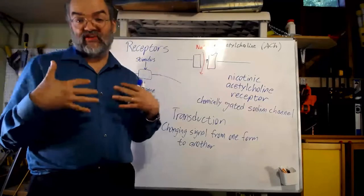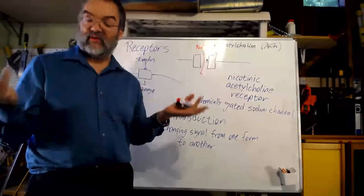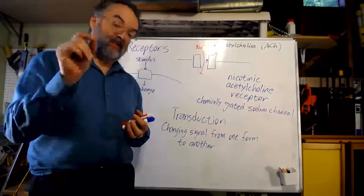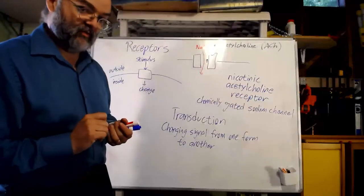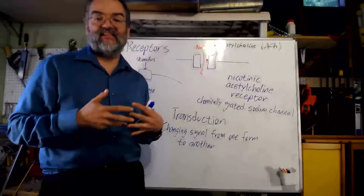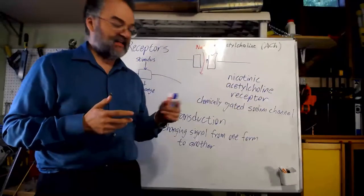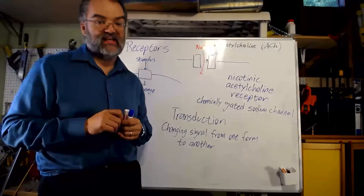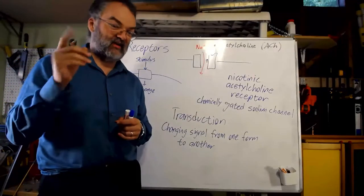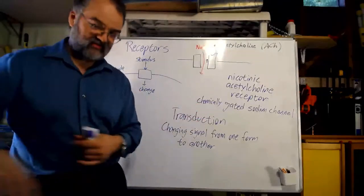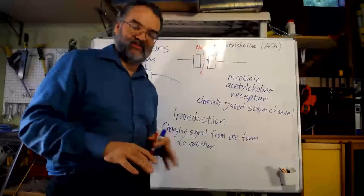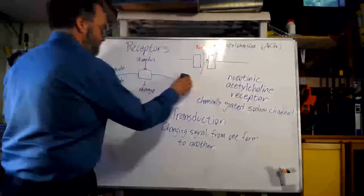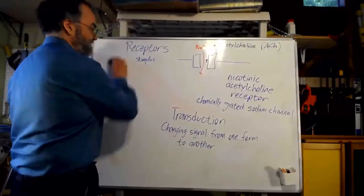A receptor causes some sort of change inside the cell in response to the presence of something outside the cell. When we get to the nervous system, we'll talk about human senses and how they do the same thing — which brings up some really interesting ideas about what's going on inside your brain. Anyway, let's talk about some specific kinds of receptors.